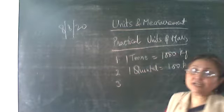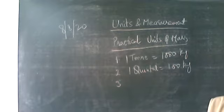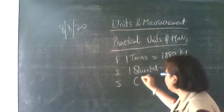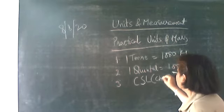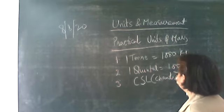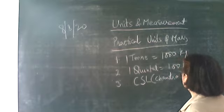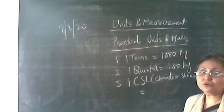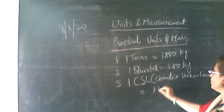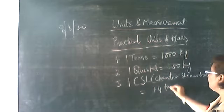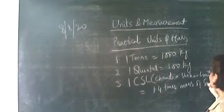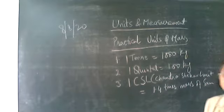Another bigger unit is the Chandrasekhar limit, written as CSL. This is a very very big unit where one Chandrasekhar limit is equal to 1.4 times the mass of the sun.